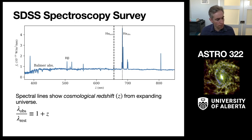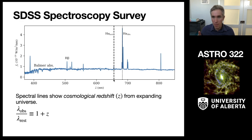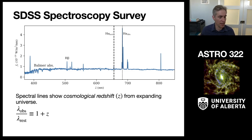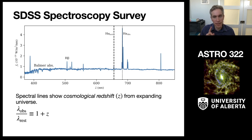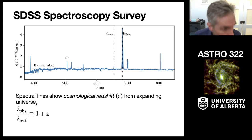You might note that the spectral lines aren't where they should be. If you look at H-alpha, which should be at 656 nanometers, we don't see it there — we see it at about 680 nanometers. It has been shifted redward. This looks like a galaxy receding from us with a large positive radial velocity, but this effect is actually from the cosmological redshift. It manifests as a recession velocity, but it is related to — not exactly the same as — that. This redshift is from the expanding universe.